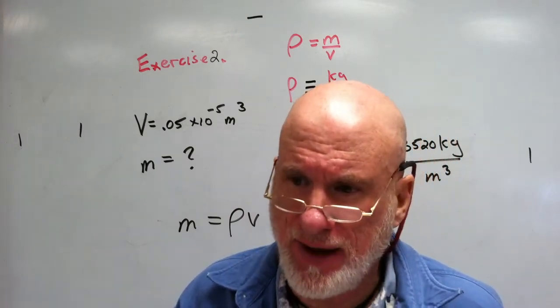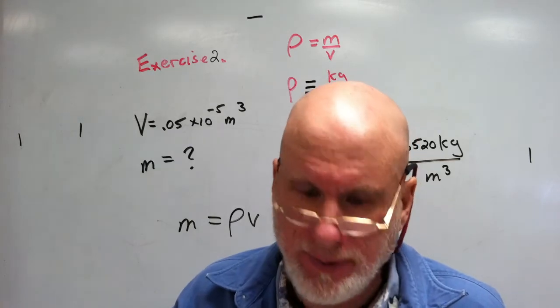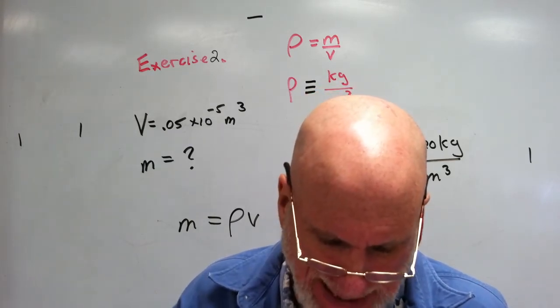Okay, diamond has a density of 3,520 kilograms per cubic meter. During a physics lab, a diamond drops out of Virginia's necklace.